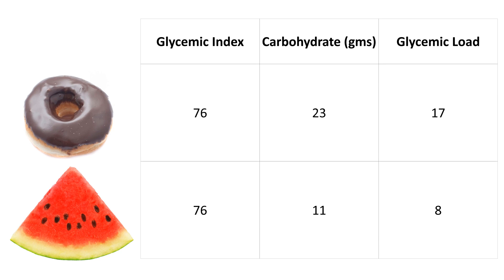For example, a medium-sized donut has a Glycemic Index of 76, which is the same as that of a cup of watermelon. But the amount of carbohydrate differs — a donut has 23 grams of carbohydrates while watermelon has 11 grams. So the Glycemic Load of a donut comes to 17 and that of watermelon comes to 8. Even though they share the same Glycemic Index, the donut has an intermediate Glycemic Load due to its higher carbohydrate content, while watermelon falls in the low Glycemic Load category.